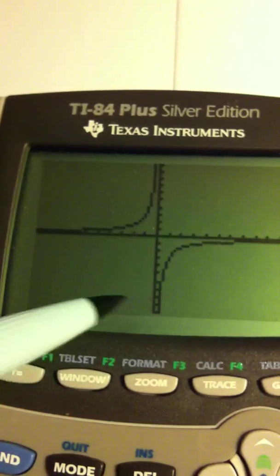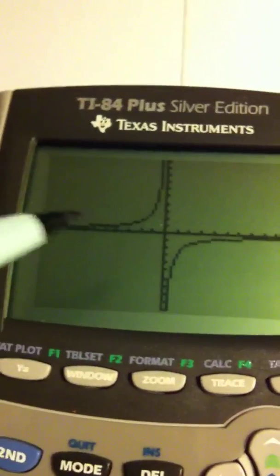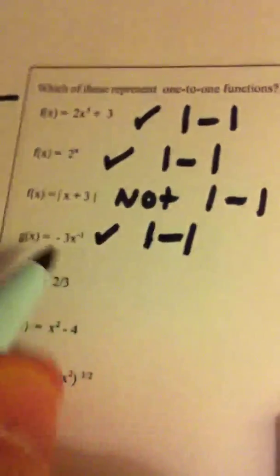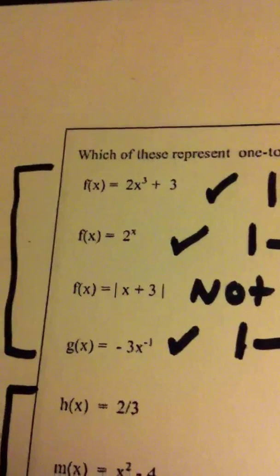How about the horizontal? Sure, any horizontal line I draw crosses my graph one time. So, this function is one-to-one, which means if you pursued it further, when you found its inverse, its inverse would also be a function.